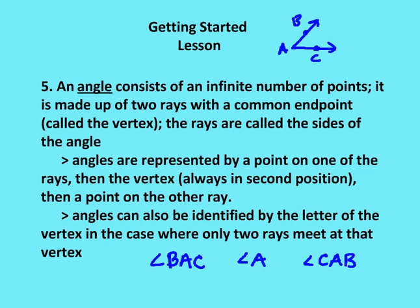Angles are always going to be represented by a point on one of the rays, then the vertex. Not always, but angles are represented or can be represented by a point on one of the rays, then the vertex, then a point on the other ray. The vertex, if you represent an angle in this fashion, the vertex is always in the second position. So, for example, I can write this angle, or represent it as angle, with the angle symbol, BAC, or I can represent it as CAB. It doesn't matter what point on which side or ray you use first, but the A or the vertex always has to be in the second position.